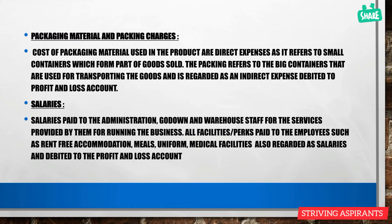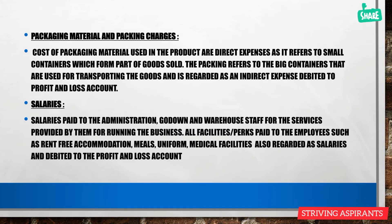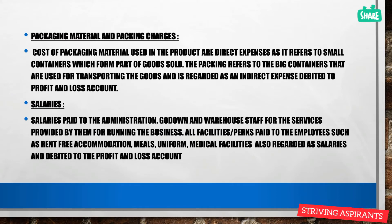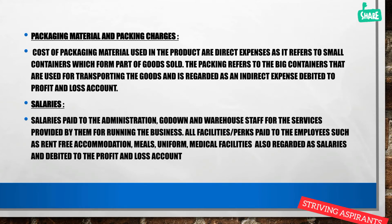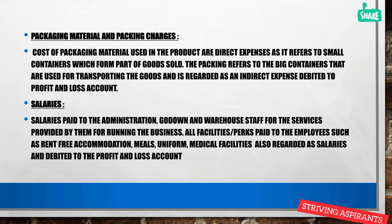Next are salaries, which are indirect expenses debited to the profit and loss account. Salaries paid to administration, godown, and warehouse staff are included here. Facilities provided to employees such as rent-free accommodation, meals, uniform, and medical facilities are also indirect expenses and are debited to the profit and loss account.